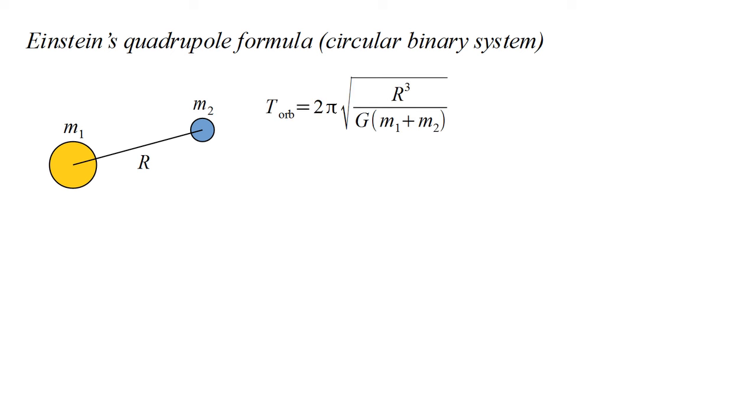If the orbits are well described by Newtonian mechanics, the orbital period is 2 pi times the square root of the distance cubed over the gravitational constant g times the sum of the masses. As we discussed previously, the gravitational radiation period will be half the orbital period.